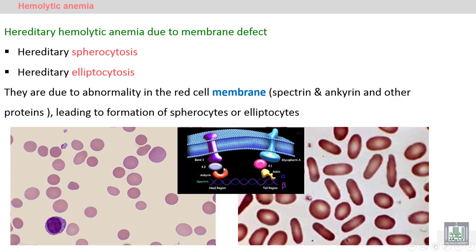Hereditary Hemolytic Anemia due to Membrane Defect. We have two diseases: Hereditary Spherocytosis, where RBCs are Spherocytes, or Hereditary Elliptocytosis, where RBCs are Elliptocytes or Ovalocytes — so it is also called Ovalocytosis.